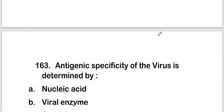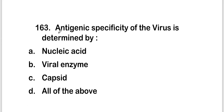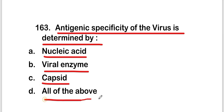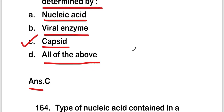The next question: antigenic specificity of the virus is determined by — nucleic acid, viral enzyme, capsid, or all of the above. The right answer is option C, that is capsid. So antigenic specificity of the virus is determined by capsid.